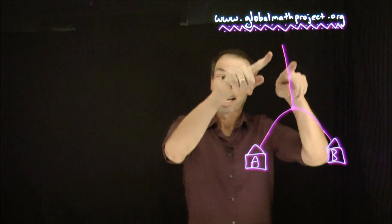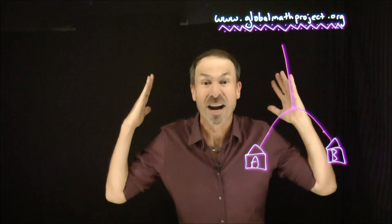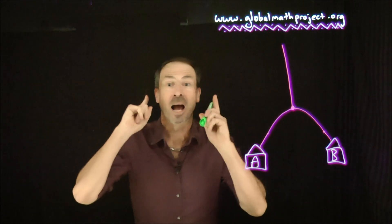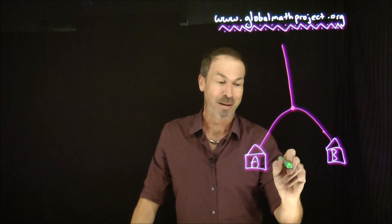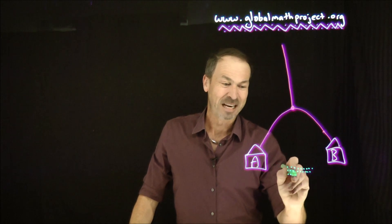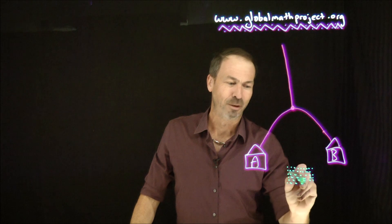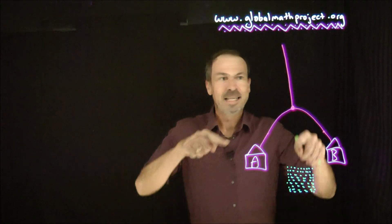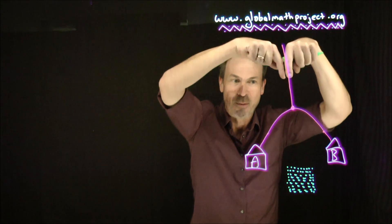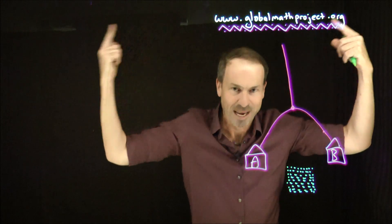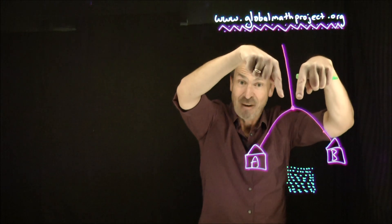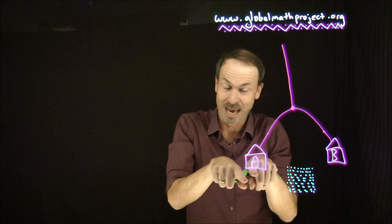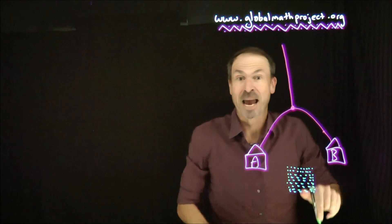Now I want to imagine sending some people down this system — a very large number. Let's send down 100 people. I'll draw dots to represent people: here's 10, another 10, another 10 — a whole block of dots representing 100 people. If we send 100 people down the system and when they get to the fork they each choose randomly, left or right, equally likely, then we expect about half of them — 50 — to go left and end up in house A, and about the other half — 50 — to end up in house B.